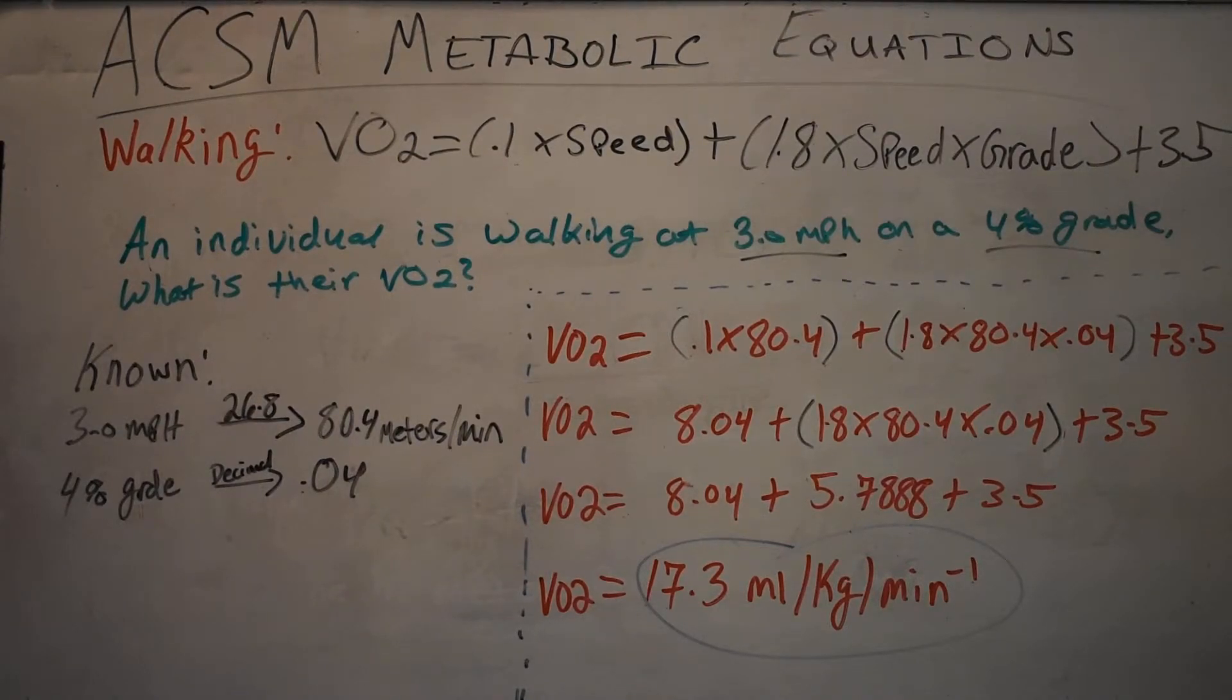I have written up here the walking equation where VO2 is equal to 0.1 times the speed. Keep in mind the caveats to the speed and the grade. You'll add 1.8 times the speed times the grade.